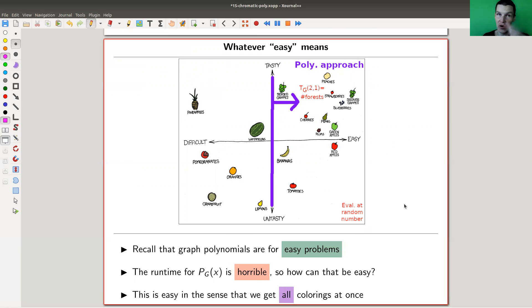And of course, there's a price to pay if you encode all colorings, right? So for all k, sorry, you have just all colorings at once. So there's some price you need to pay. And I will still call this an easy problem because you kind of solve infinitely many problems at once.